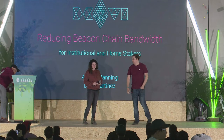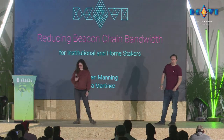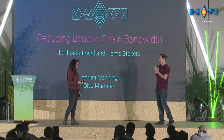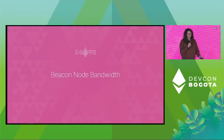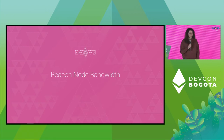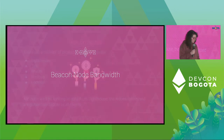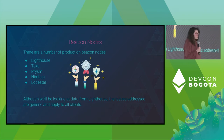We work on the Lighthouse client, and we're going to be talking about reducing beacon chain bandwidth for institutional and home stakers. I'm going to leave it up to Diva, who's a Bogota local and our peer-to-peer network expert, to kick us off. First, we need to check, in order to analyze how to reduce bandwidth for institutional and home stakers, what does the bandwidth look like right now. We are going to be looking at data from Lighthouse — it's one of the production beacon nodes.